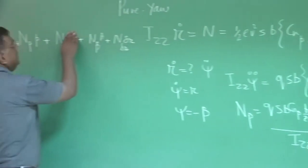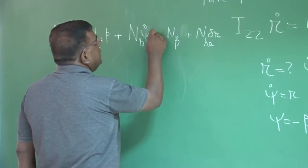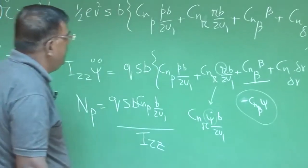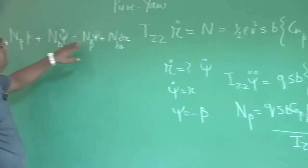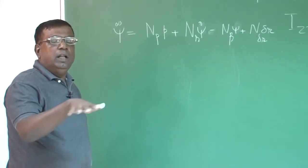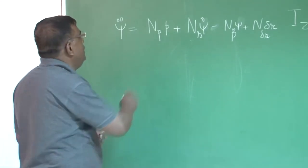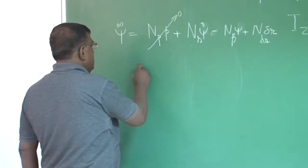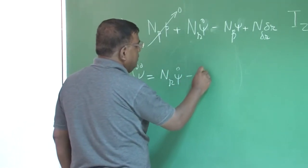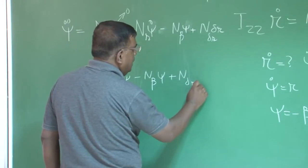Here I modify it: I write psi_dot and minus this. From this equation, beta equals minus psi and psi_dot equals R, so all those terms are converted into psi_dot. Now, if the airplane is doing only pure yaw like this, then there is no p — we are not doing rolling motion, only yawing motion. So naturally, that term goes. I have got: psi_double_dot equals nr * psi_dot + n_beta * psi + n_delta_r * delta_r.